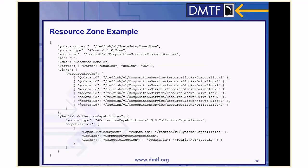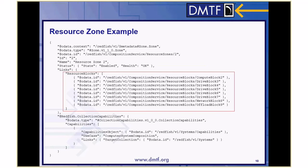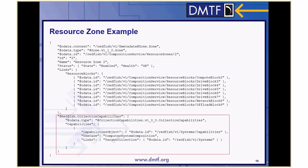This is a sample payload for a resource zone. In the links object, the resource blocks array shows the different resource blocks that are able to be composed together. In this resource zone, a client is able to make compositions using compute block 2, drive blocks 3 through 7, network block 8, and offload block 9. The @redfish.collection capabilities annotation describes the types of compositions this resource zone is able to produce, where those composition requests can be made, and how a client can form the composition request. We'll go into details about the capabilities in a few slides.